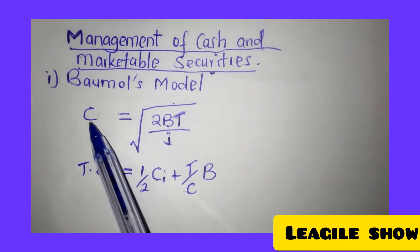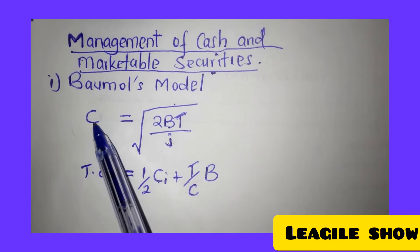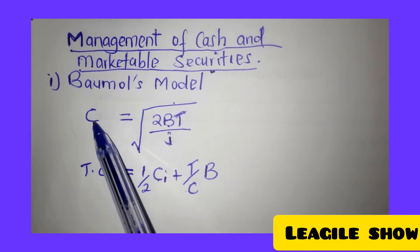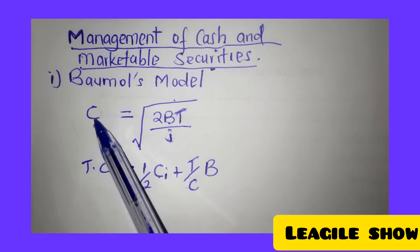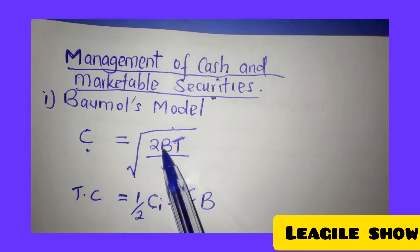C here represents the optimal cash to be raised by selling marketable securities or even by borrowing.